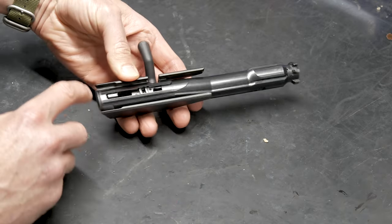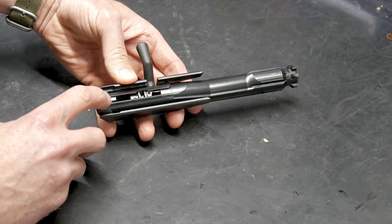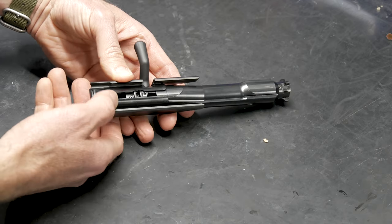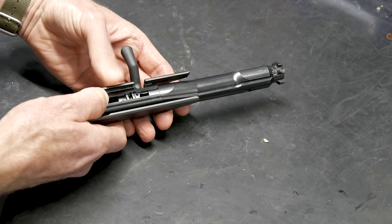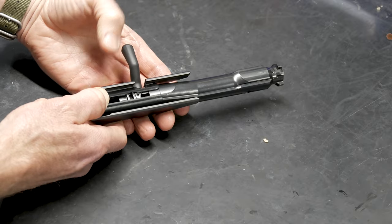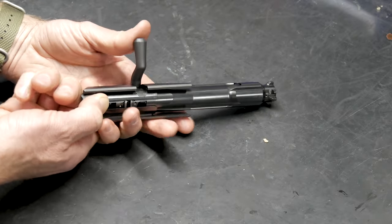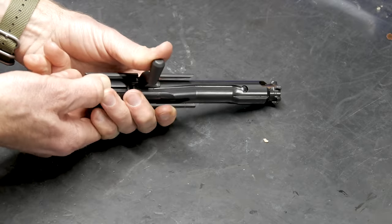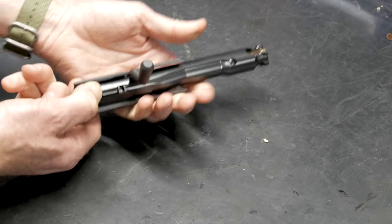Turning this over, right here we have the cocking piece. We want to apply downward pressure, not tons, but press down so it won't move forward. Once we've done that, we're going to rotate the bolt handle back into the down position.